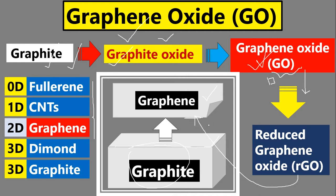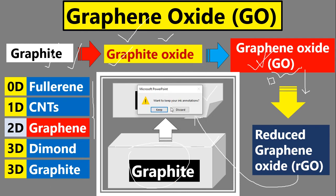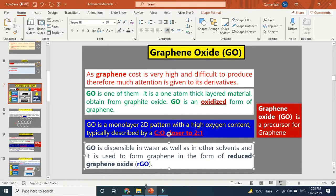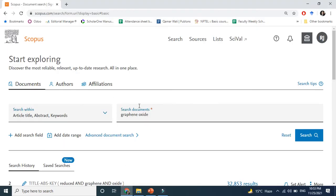The question is: why don't we directly get graphene instead of this lengthy process? The reason is that graphene is expensive and requires a very tedious production process. Before explaining more, let's go to Scopus and see what the importance of graphene oxide is in current research.